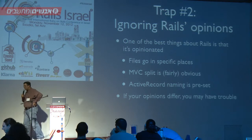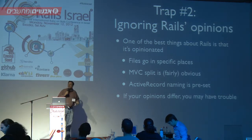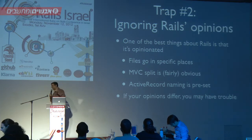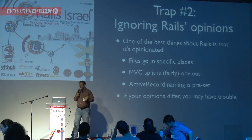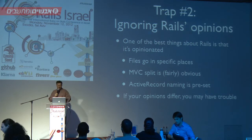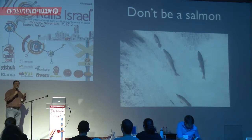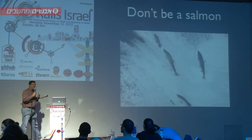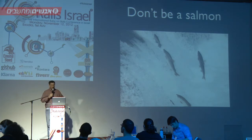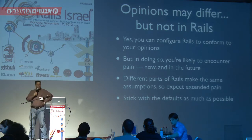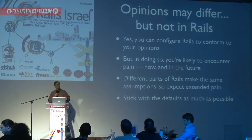Trap number two is ignoring Rails' opinions. We love to say that Rails is opinionated software — files go in certain places, the MVC split is obvious, Active Record naming is set. You could change all these defaults, but in my classes people always ask 'but what if I want to?' The analogy I always use is: don't be a salmon, don't swim upstream. You can reconfigure Rails to conform to your opinions, but it's going to hurt you now and in the future. Stick with the defaults. Keep it simple. Always have a synthetic primary key called ID, keep to naming conventions, keep models fat and controllers skinny, and use filters and callbacks.